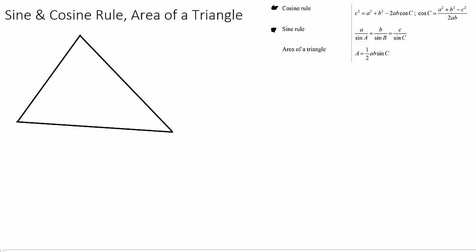So this is my blank triangle here. I'll give these some angles and change it throughout this video to do a few different examples. Let's start with this angle here being 55 degrees and this one being 48 degrees. We know this side length is 12 centimeters, and we want to find this side length, x. We are given two angles and one side length, and we want to find another side length. If we have two angles and a side length and want to find another side length, we need to use the sine rule.